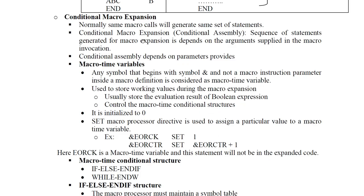The third machine independent macro feature is conditional macro expansion. Based on some condition, macro expansion is possible — meaning only part of the complete macro body is expanded based on a condition.